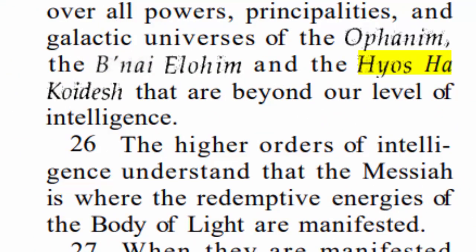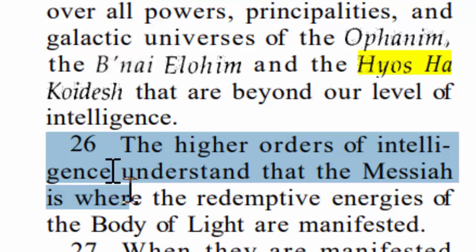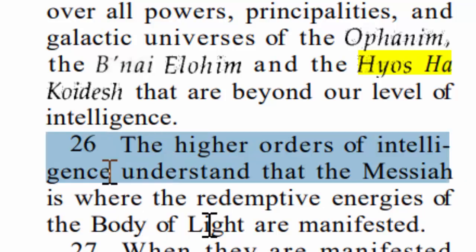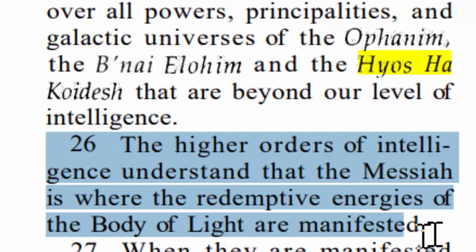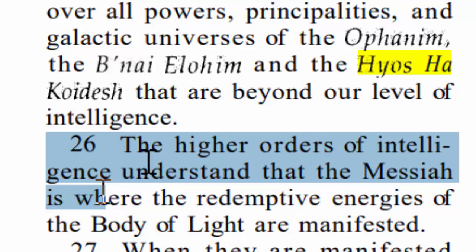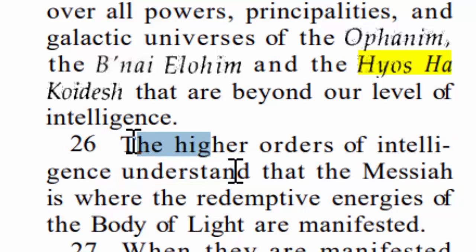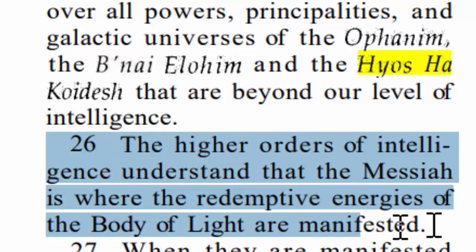Verse 26 says the higher orders of intelligence understand that the Messiah is where the redemptive energies of the body of light are manifested. This is really important to understand as we go through this book — what we're learning is of a higher order of intelligence. For those who want to keep themselves on the milk diet, only reading Psalms 23 or whatever, they're going to have a hard time understanding these higher levels. But guys, we're living in the time in which we were promised that knowledge would increase.